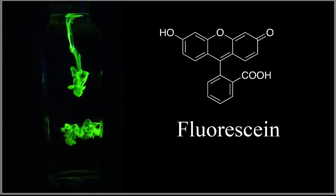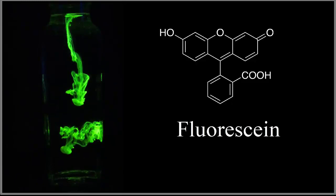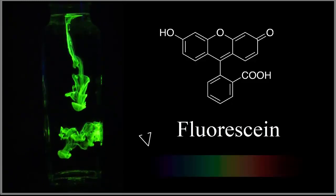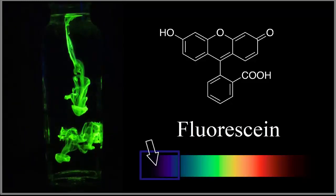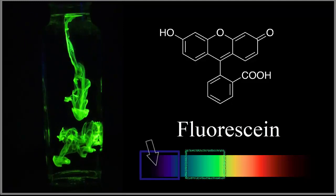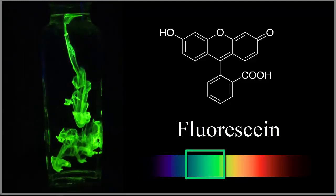So I have a beaker of water that I dropped some fluorescein into, and then I have a black light off to the side. It's giving off light that the fluorescein absorbs, even though we don't see it well, and then the fluorescein releases the light in that nice green color.